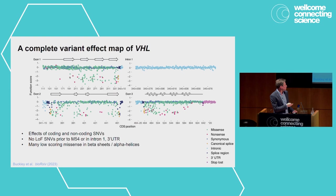Many of the missense variants that score lowly or intermediately map to the beta sheets or alpha helices of the secondary structure of the protein.